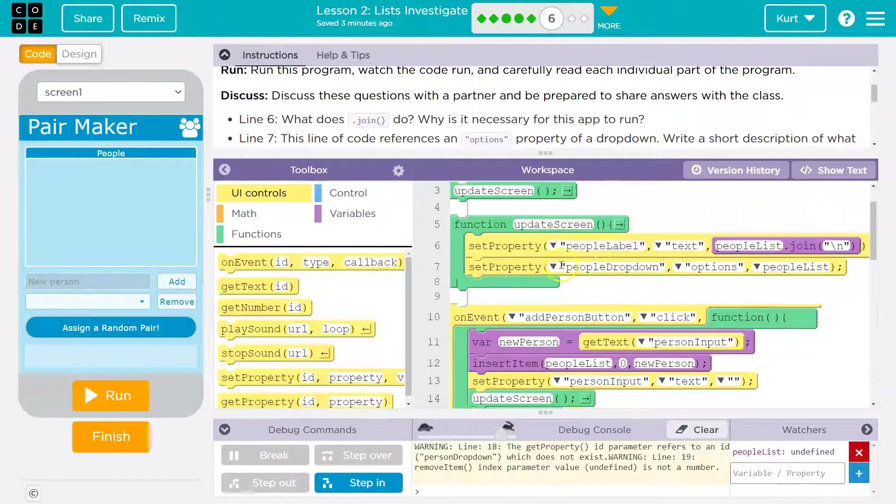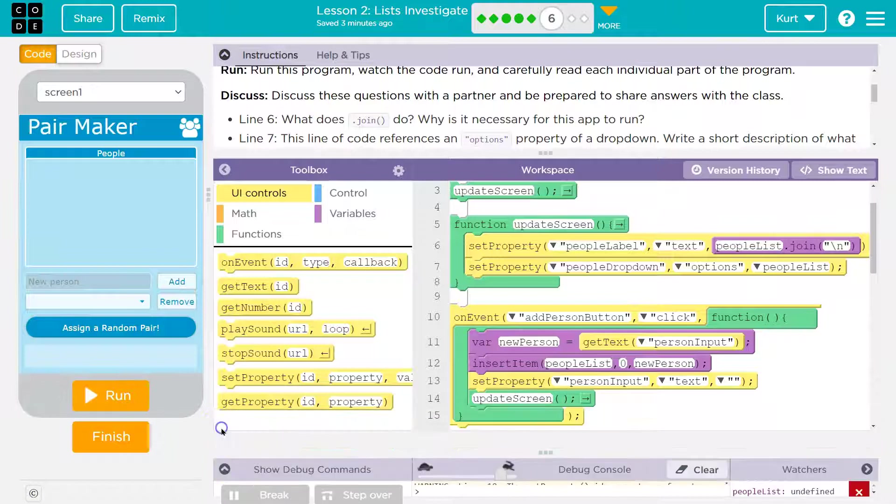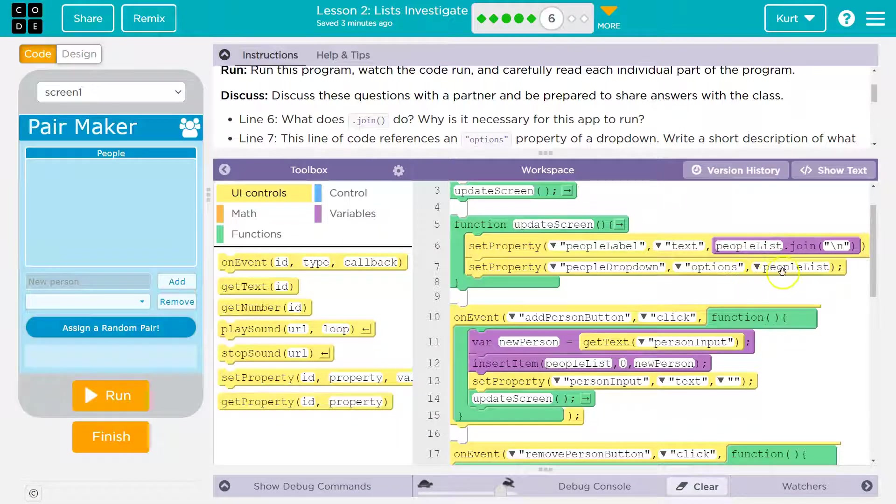Update screen. So this is going to people label, which is, yep, that text people dot join slash in people list join in. Okay. Let's see if we'll see that again. Set property options. People list. Okay. Options. Oh, so that's people drop down options. People list. So that's pushing the people list to be displayed here. Got it.